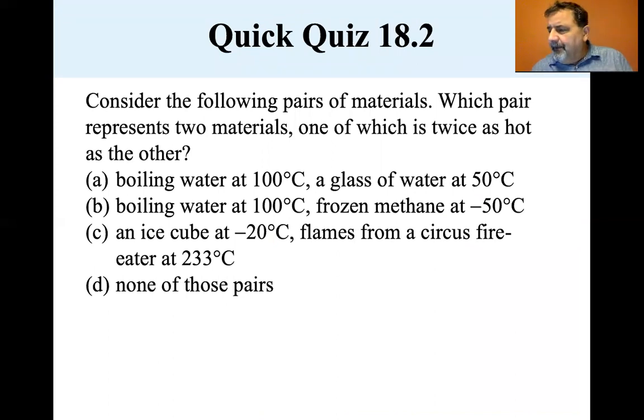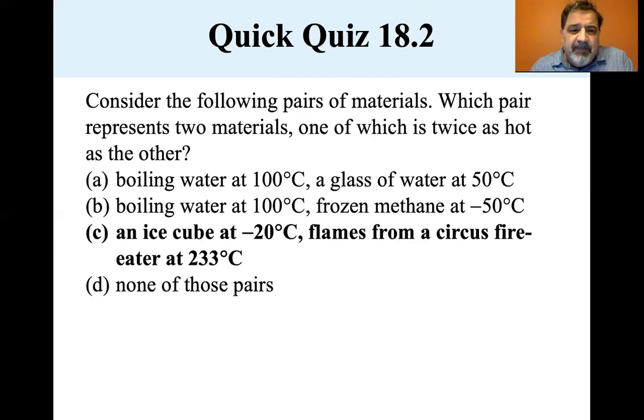Let's consider the following pairs of materials, which pair represents two materials, one of which is twice as hot as the other. Boiling water at 100 degrees, a glass of water at 50, that's, we're not taking that into consideration. Boiling water at 100, a frozen methane at 50, that's still not quite. But let's look at an ice cube at minus 20, and flames from a circus eater at 233. If we convert those to Kelvin, we'll see that an ice cube at minus 20 is 253 Kelvin, and flames from a circus fire eater at 233. If we add 273, we get 506. Well, 253 and 506, 506 is double 253. So, it's C, that's the correct answer.